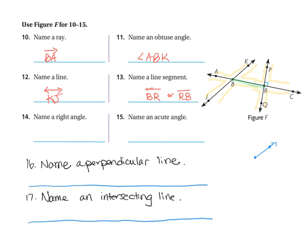Number 14 asks for a right angle. We already pointed out we have four right angles, so I have my choice between any of them. I'm going to go with the obvious one on the top and do angle PRC — so angle P, R, C.